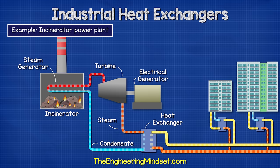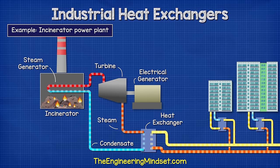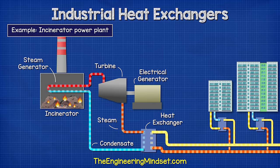These heat exchangers are very common for heating and cooling. For example, an incinerator power plant burns household waste to generate heat, creating steam that drives a turbine and generates electricity. The waste thermal energy then passes through a plate heat exchanger to heat a district heating network, and other buildings connect to this heat network also via a plate heat exchanger to supply their own heating demands — instead of operating their own individual boiler.